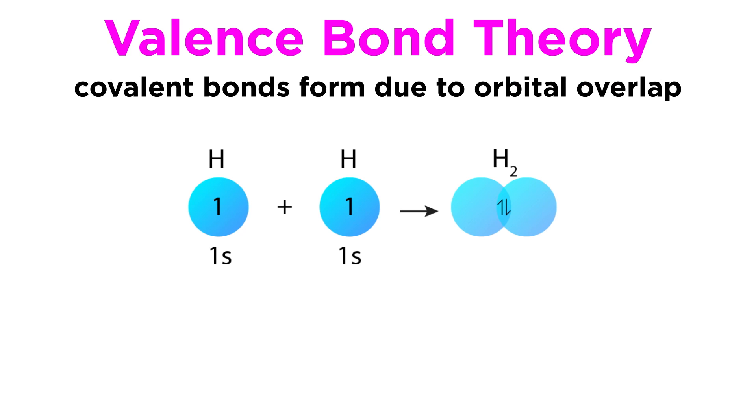According to valence bond theory, two atoms will participate in a covalent bond when they approach one another, and a singly occupied orbital on one atom overlaps with a singly occupied orbital on the other atom, such that the two electrons are paired in the overlapping orbitals and can thus be attracted to the nuclei of both atoms.